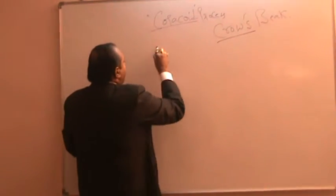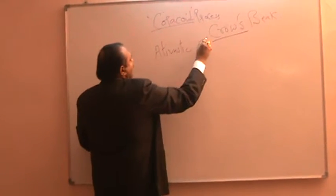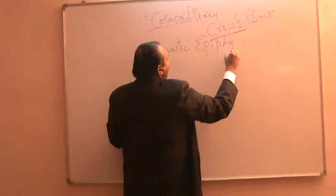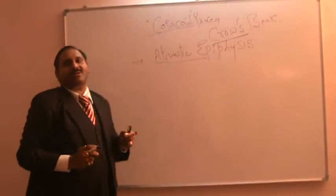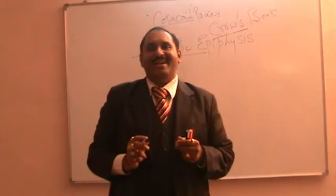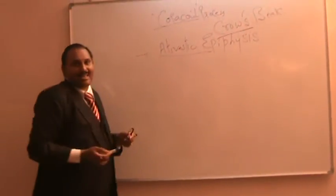Now this is very frequently asked, why? Because it is a classical example of atavistic epiphysis. The coracoid process is a very classical example of atavistic epiphysis. And that's why we are going to ask this question again and again.